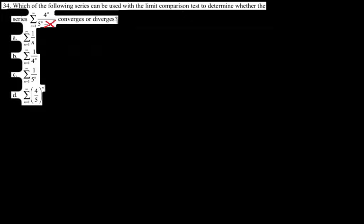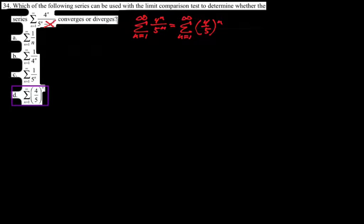Which series can be used with the limit comparison test to determine whether 4^N over (5^N − N²) converges or diverges? 5^N still crushes N² as we go to infinity, so I cancel it. The series is basically 4^N over 5^N = (4/5)^N. So I would want to limit compare to D: (4/5)^N. Choice A misunderstands dominant terms, B and C are wrong for similar reasons, and D is the right answer.